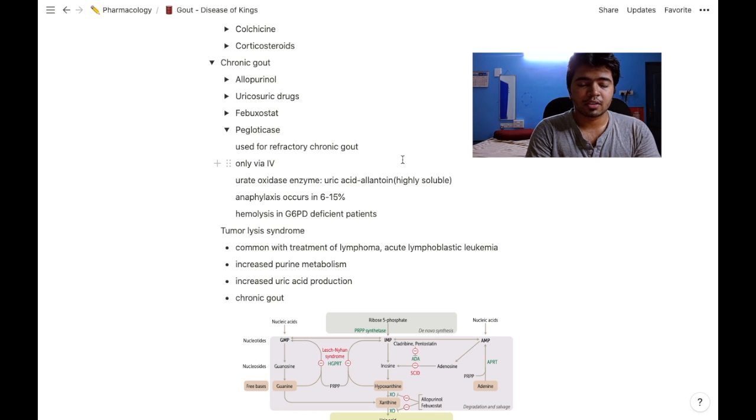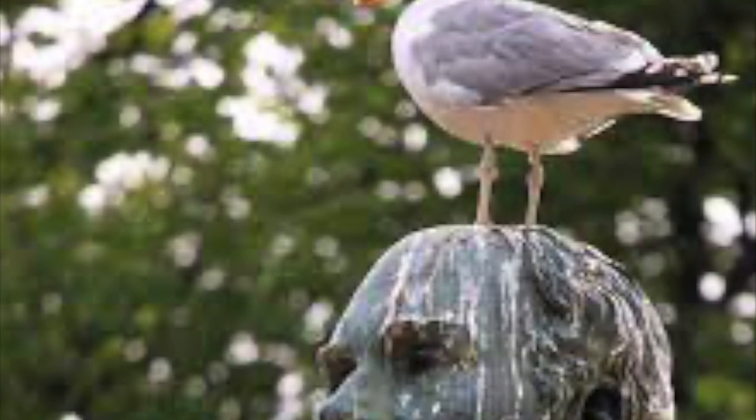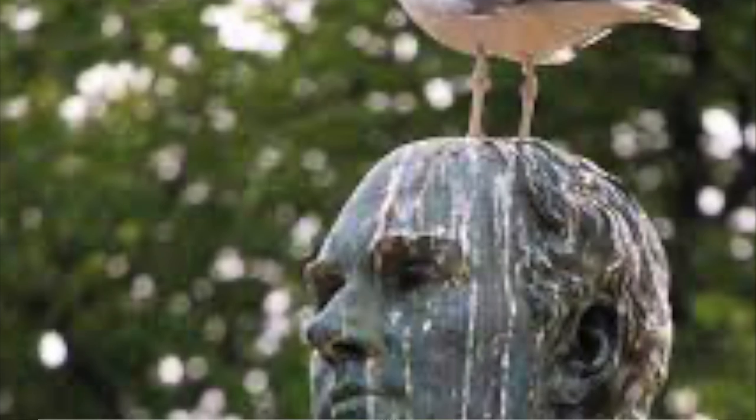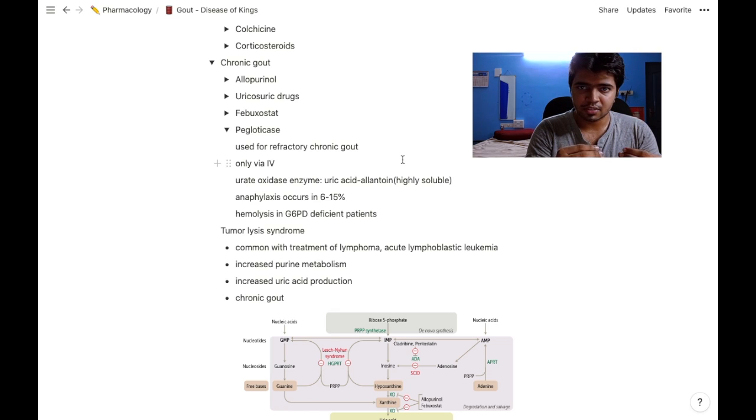The urate oxidase enzyme present in pegloticase converts uric acid into allantoin. This enzyme is naturally present in birds. Allantoin is highly water soluble, making it really easy to excrete.